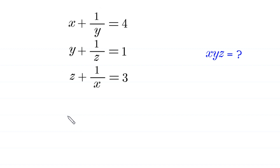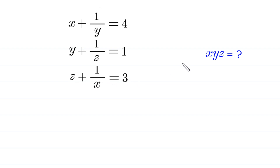Hello everyone, you are welcome to solve this very nice system of equations. x plus 1 over y is equal to 4, and y plus 1 over z is equal to 1, and z plus 1 over x is equal to 3. Our job is to find all possible values of x, y, z.